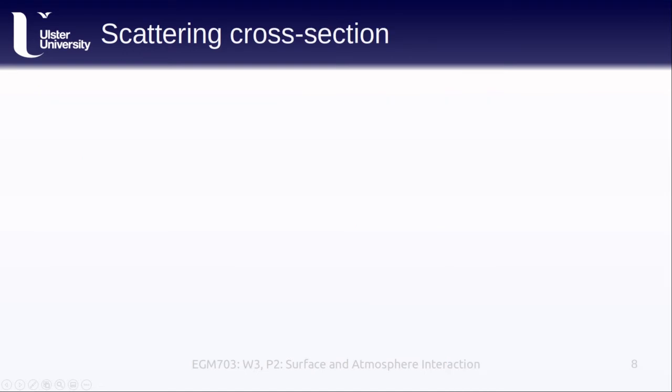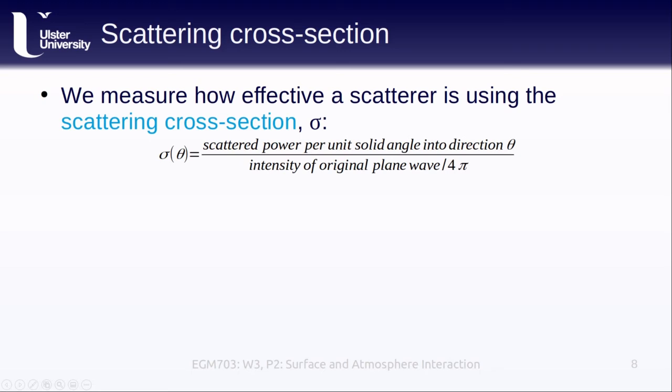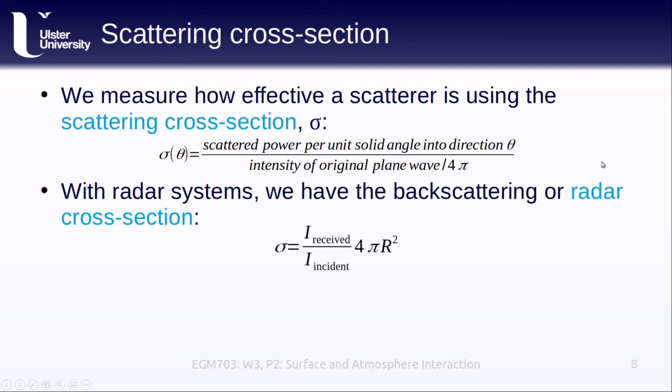We can measure how effective a scatterer is using something called the scattering cross section, or sigma. The scattering cross section, as a function of direction theta, is the ratio of the scattered power per unit solid angle into the direction that we're measuring from to the intensity of the original plane wave divided by 4 pi to make sure that it's also in units of power per solid angle. For radar systems, we call this the radar cross section, and it's the ratio of the received power to the power transmitted by the sensor multiplied by 4 pi multiplied by the distance between the transmitter and the target r squared.